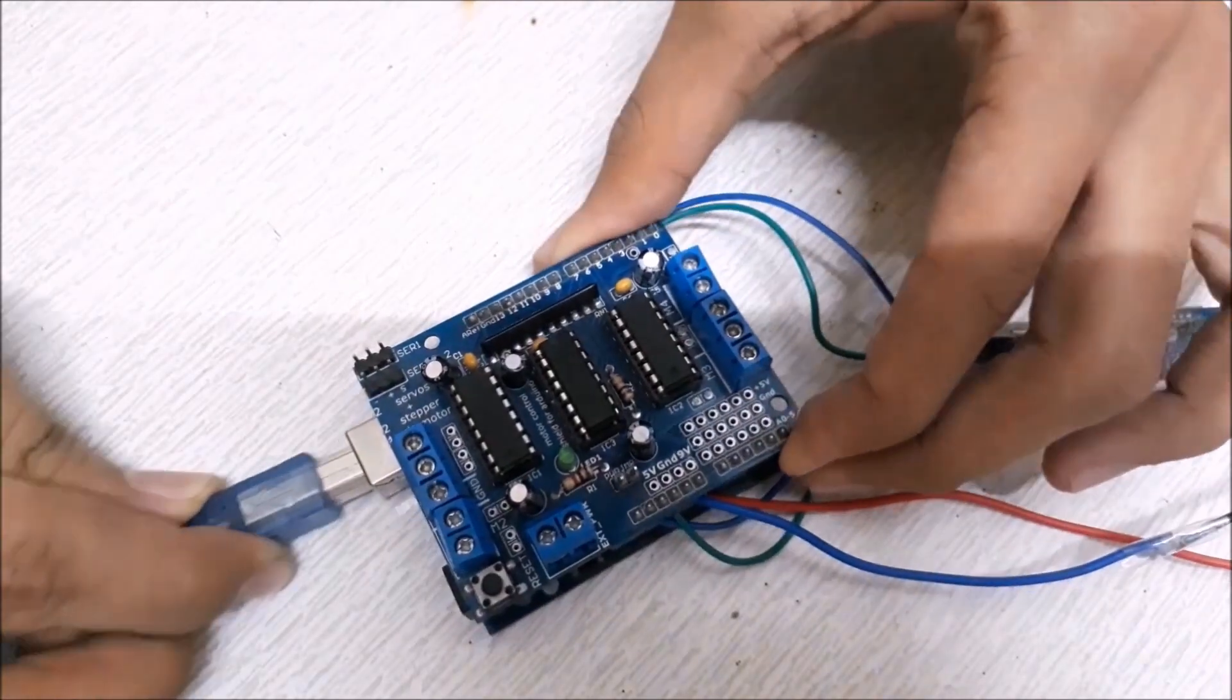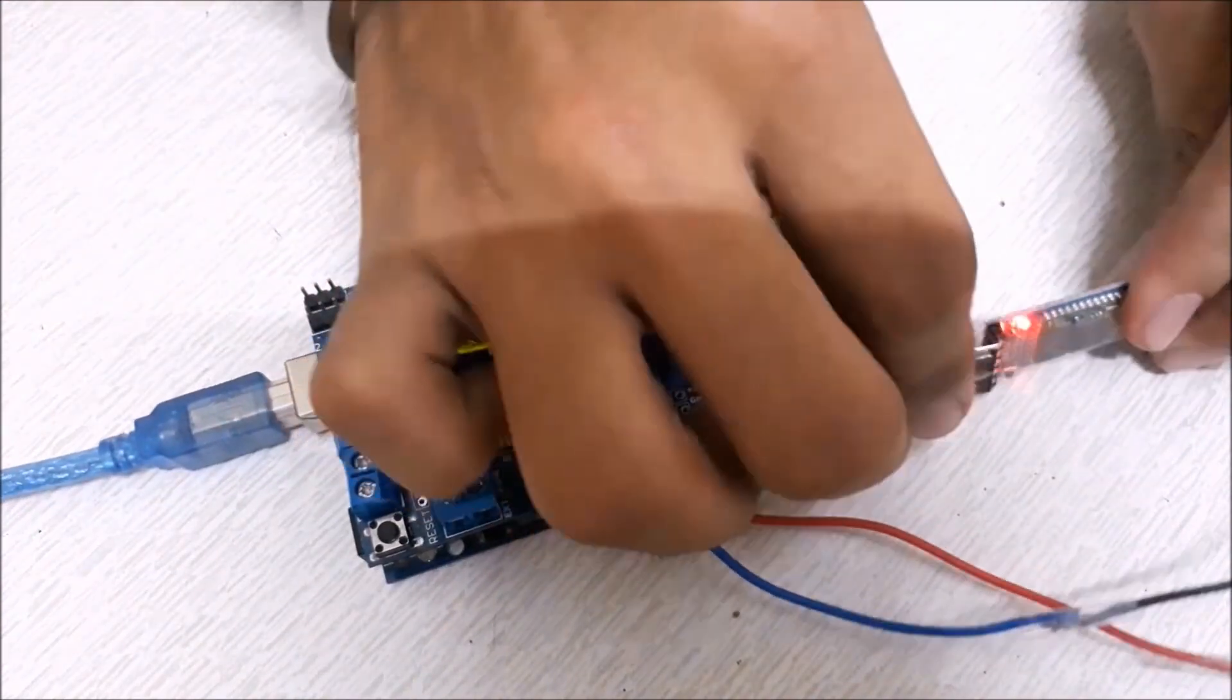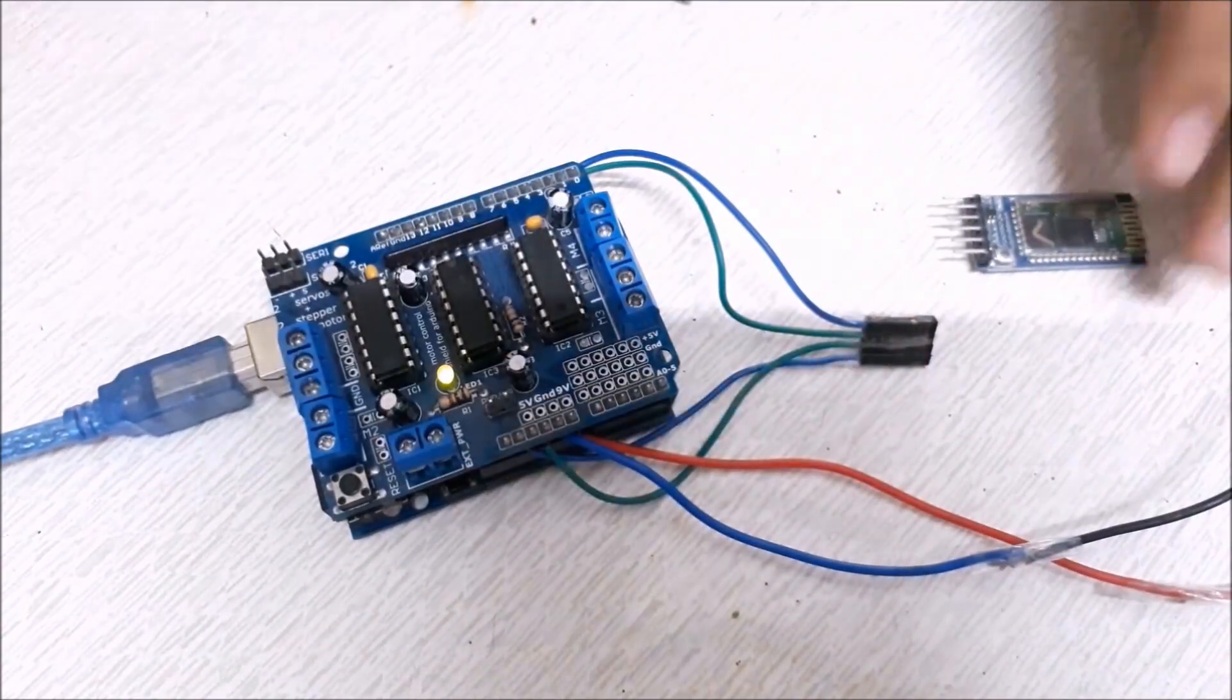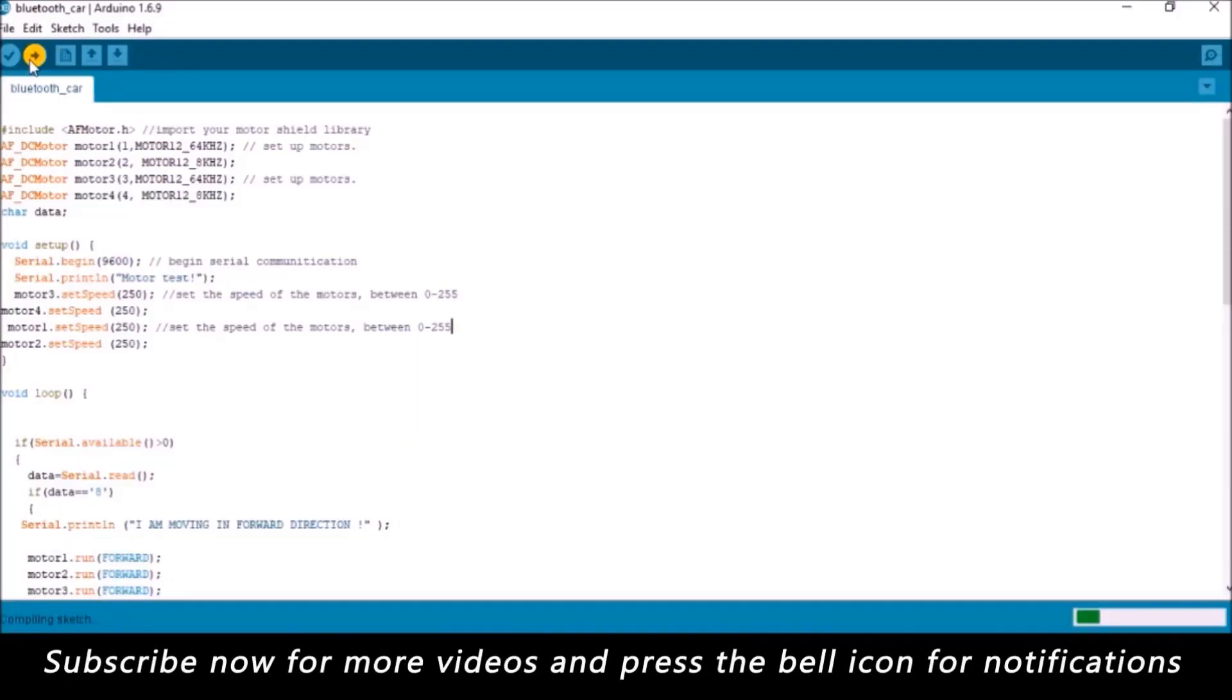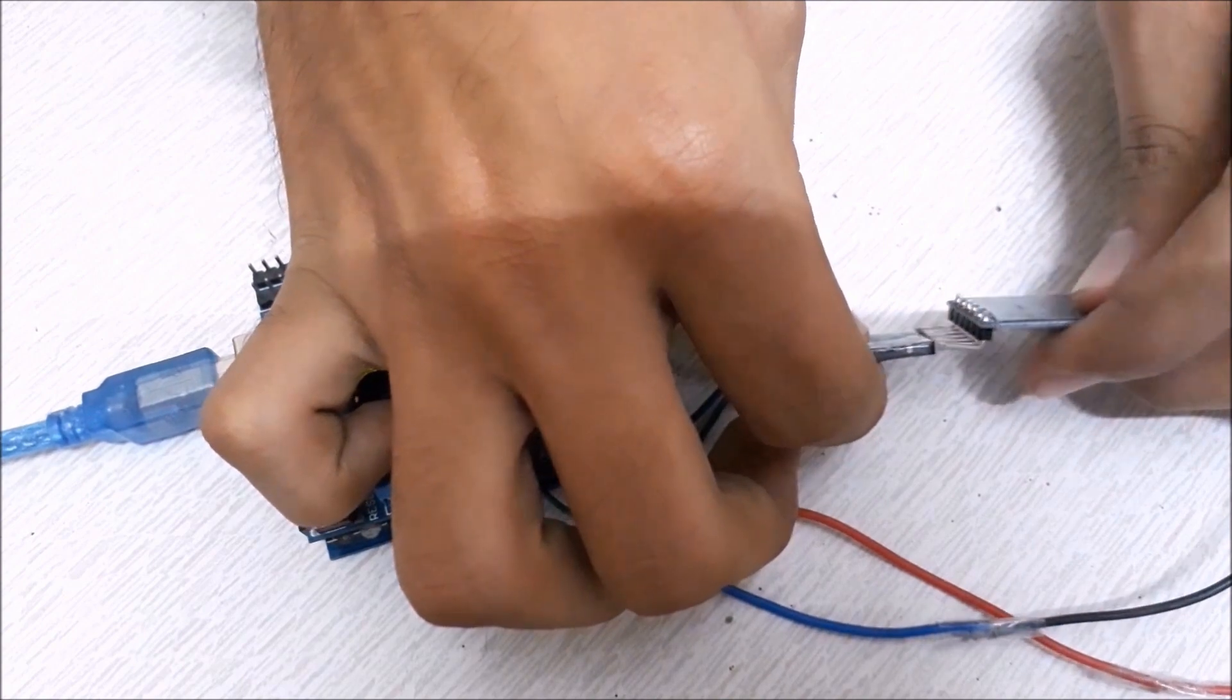Now connect Arduino to your PC and upload the code. You might need to disconnect the Bluetooth module while uploading the code. Once the code is uploaded reconnect the Bluetooth module.